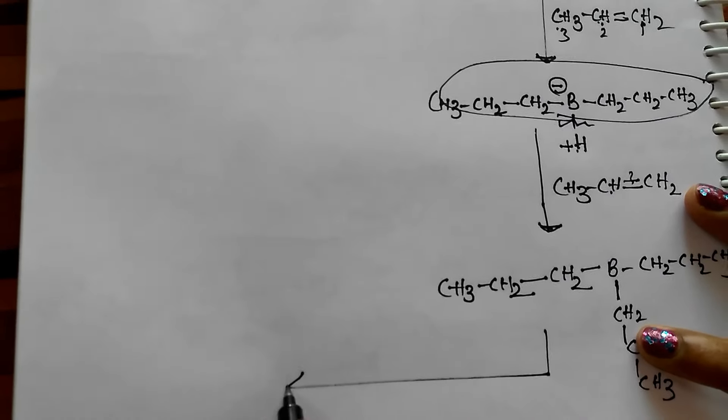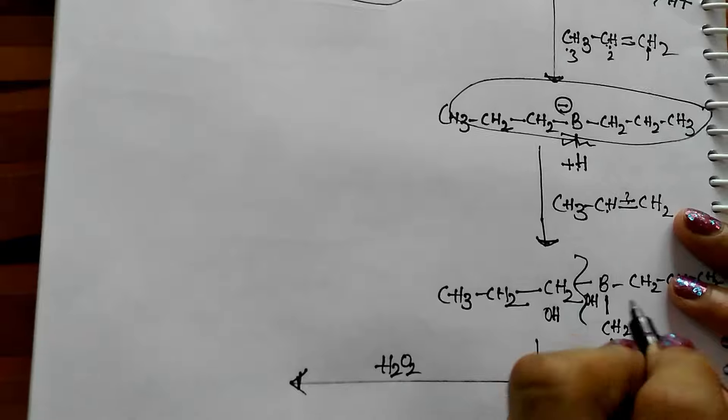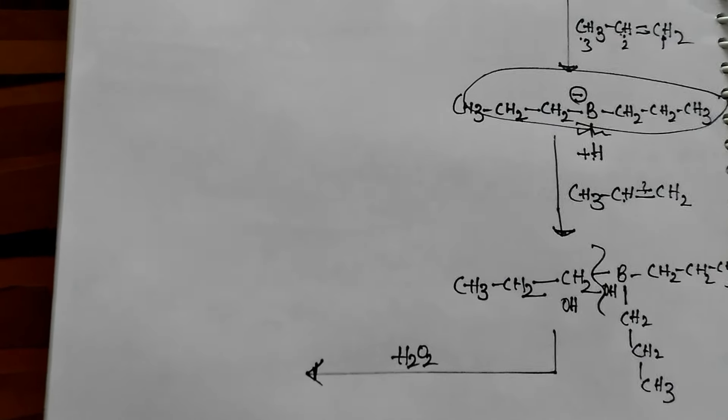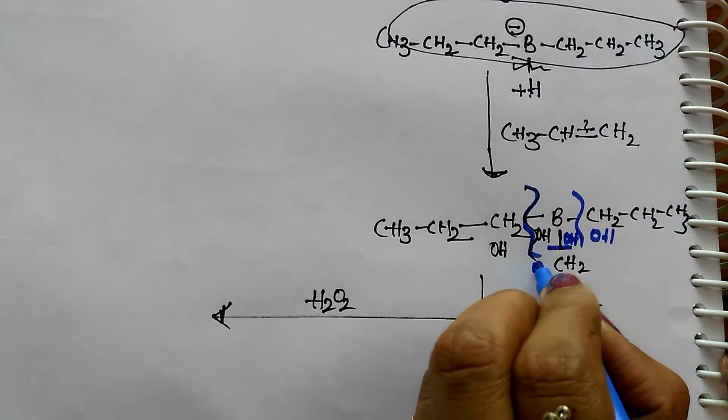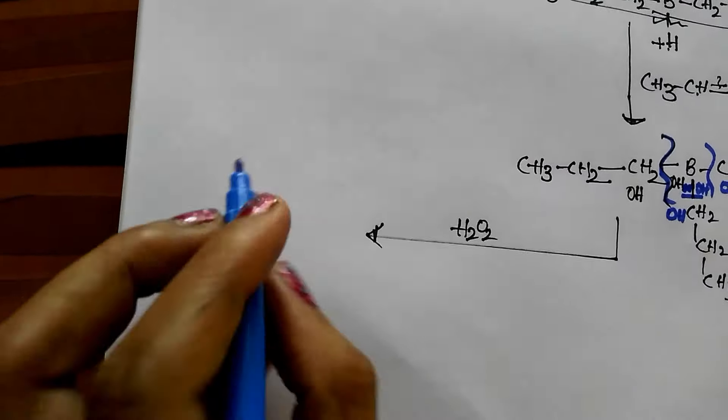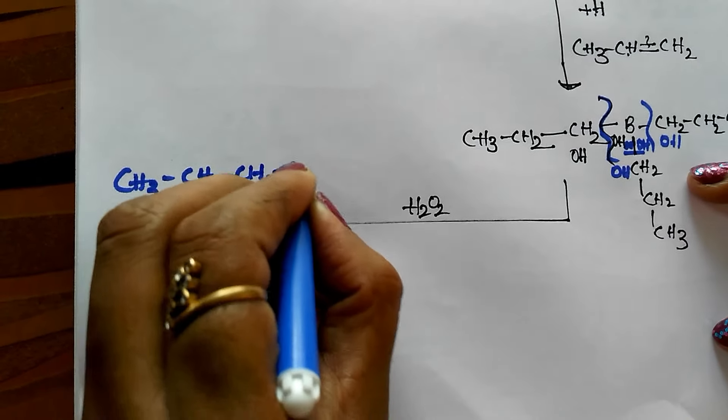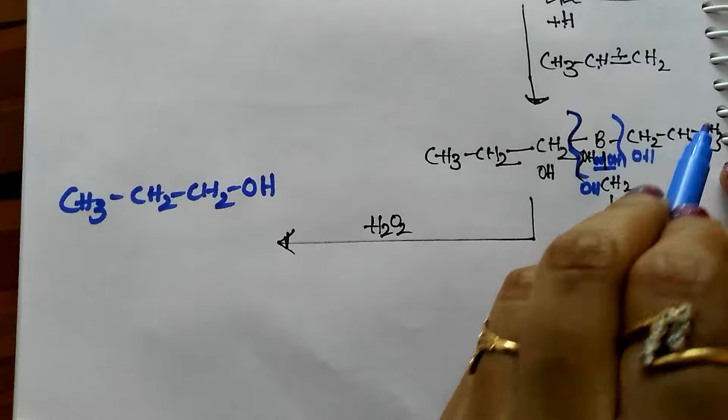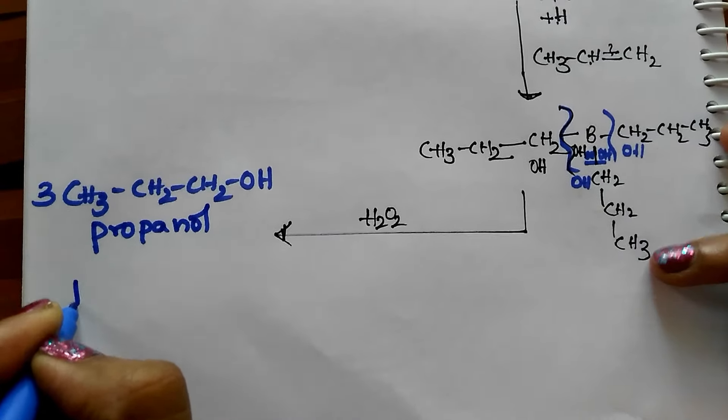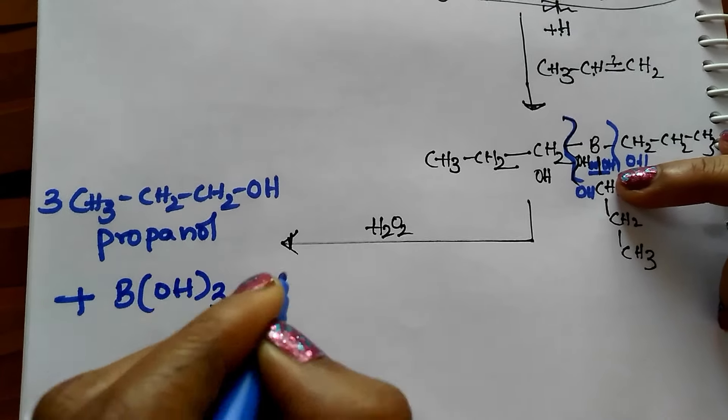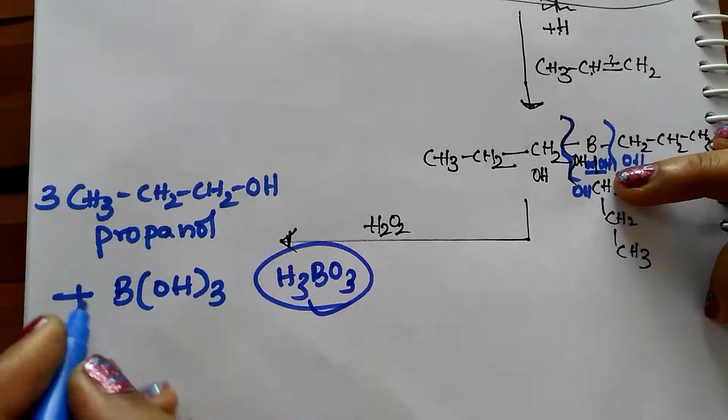Which upon further oxidation with H2O2, this bond will break, one side OH, this side OH, and this bond breaks OH, and OH. Finally I will be getting CH3-CH2-CH2-OH propanol. How many moles of propanol? 1, 2, 3, 3 moles of propanol, and B-OH thrice, this is nothing but H3BO3, that is called boric acid.